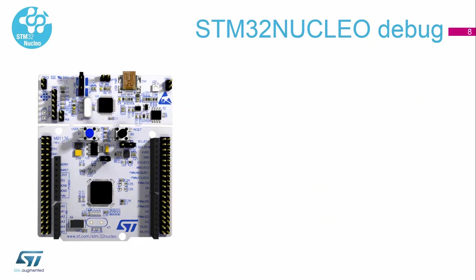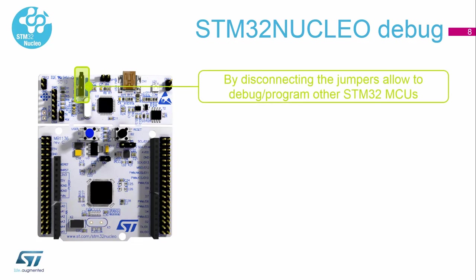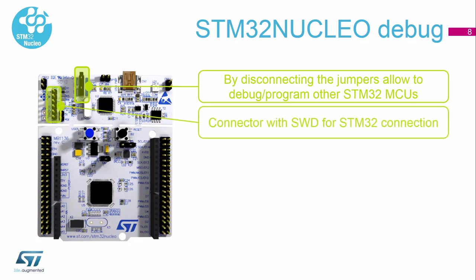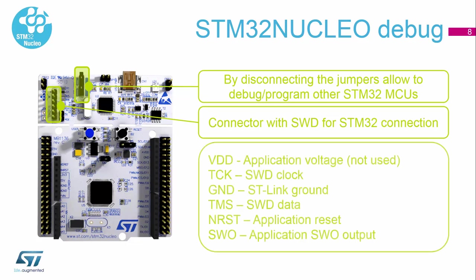You can also connect external devices if you disconnect these two jumpers. You can use this connector to connect any external STM32 microcontroller, using the relevant pins of this header — mainly the clock, SW clock, ground, and SWData. This is the minimum setting, but we also recommend connecting at least the reset.